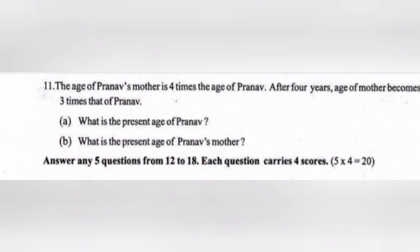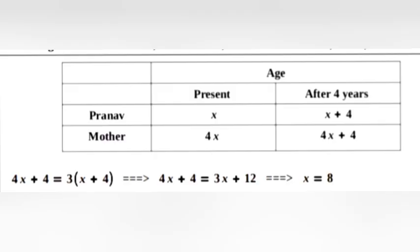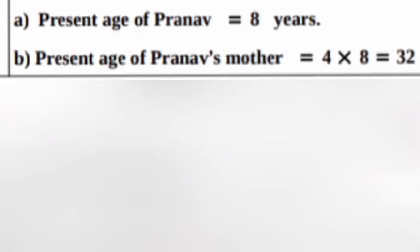11. The age of Pranav's mother is 4 times the age of Pranav. After 4 years, the age of mother becomes 3 times that of Pranav. Let Pranav's present age be X. Then: 4X plus 4 equals 3(X plus 4), giving 4X plus 4 equals 3X plus 12, so X equals 8. A. Present age of Pranav equals 8 years. B. Present age of Pranav's mother equals 4 times 8 equals 32 years.